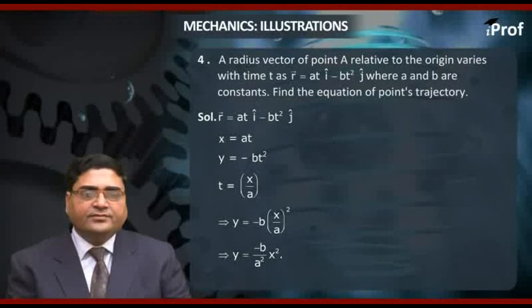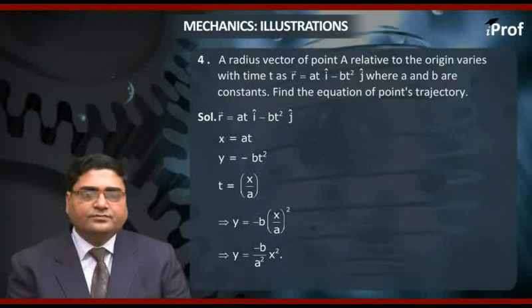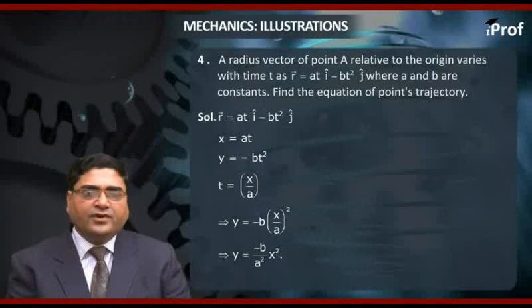Substituting the value of t, we get y equal to minus b times x upon a whole square, which implies y equal to minus b x square upon a square, which is the solution.